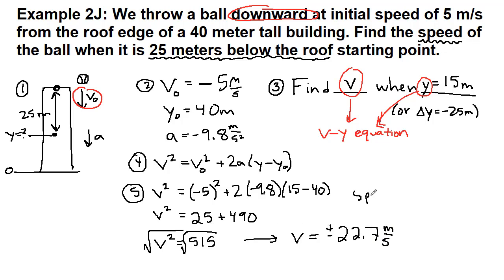But then the speed, we don't have to have the plus or minus, the speed would be 22.7 meters per second. All right, so our step six check of does this make sense?